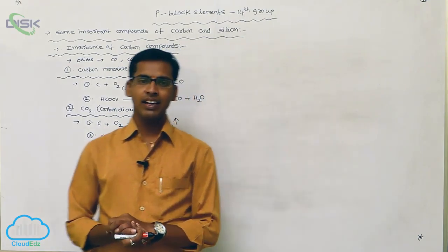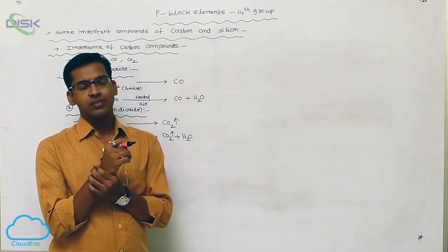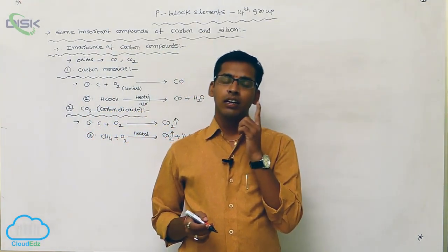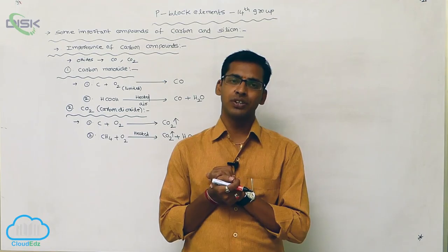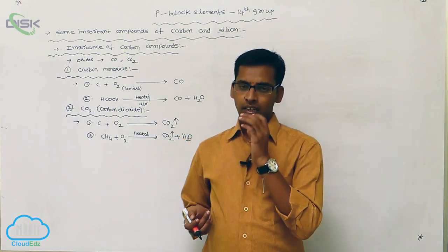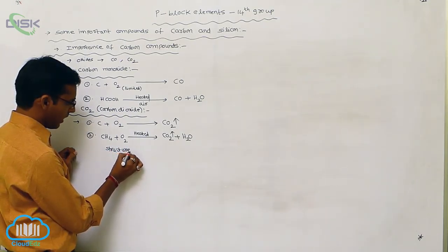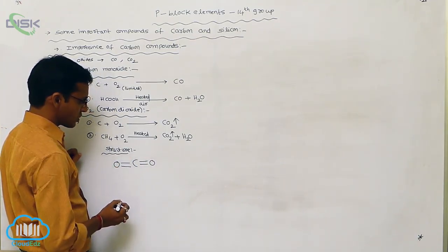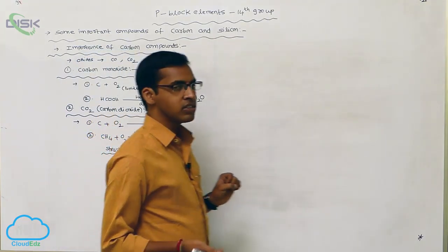Carbon dioxide is a non-poisonous, colorless, and odorless gas. In carbon dioxide, between the carbon and oxygen, one sigma bond and one pi bond are present. It undergoes sp hybridization and its shape is linear. The structure of carbon dioxide is C=O=O (a double bond on each side), giving a linear shape, and carbon dioxide exhibits some resonating structures.